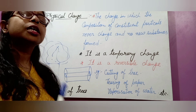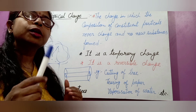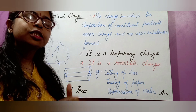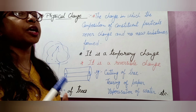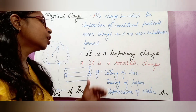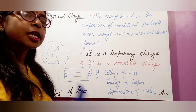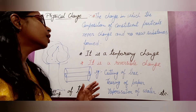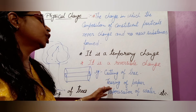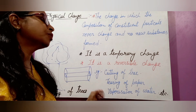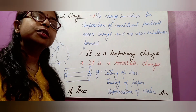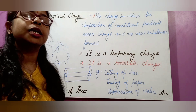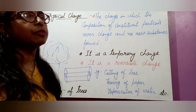These types of changes are known as physical changes. Physical change is a temporary change and it is a reversible change — meaning the original substances can come back. Other examples of physical change are tearing of paper and evaporation of water.